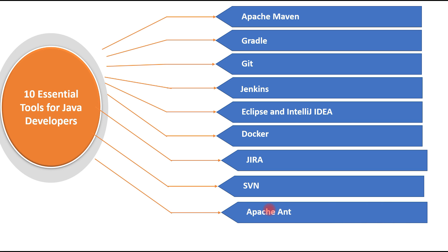Next is Apache Ant. Alongside Maven and Gradle, some Java projects still use Apache Ant as a build tool. Ant is a Java library used to automate the software build process — compiling, running, testing, and assembling Java applications. Nowadays most projects use Maven or Gradle, but legacy Java projects in many IT companies are still using Apache Ant.